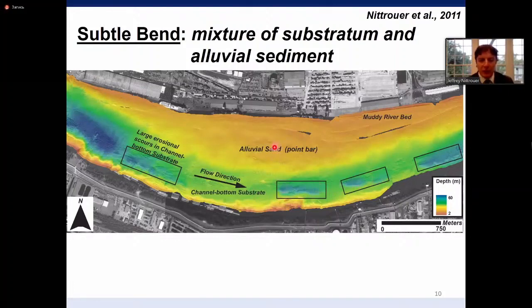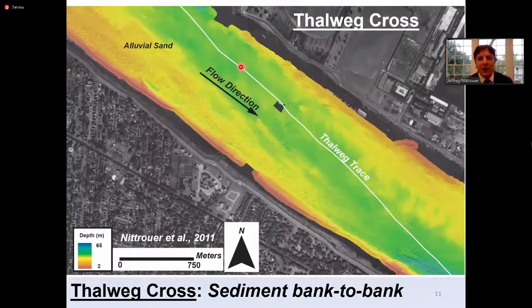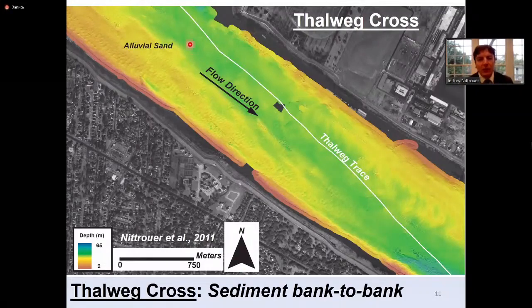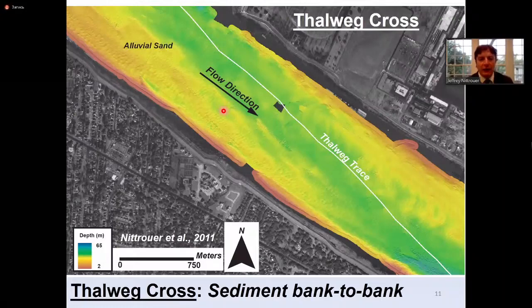Where the thalweg crosses from one bank line to another due to two opposing bend segments — a thalweg cross — we have complete alluvial cover of sandy sediment across the bed. In this circumstance, we don't expose any of the underlying substrate but instead have dunes mantling the bed bank to bank.